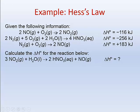Let's analyze the first step. It says 2NO + O₂ reacts to form 2NO₂. If we look at our overall reaction, this step is in the reverse order of what we want — in our overall reaction, NO₂ is a reactant and NO is a product, but in this step, NO is the reactant and NO₂ is the product. That's the first problem.